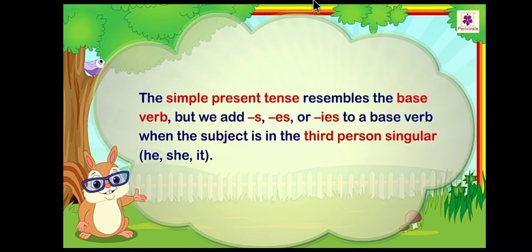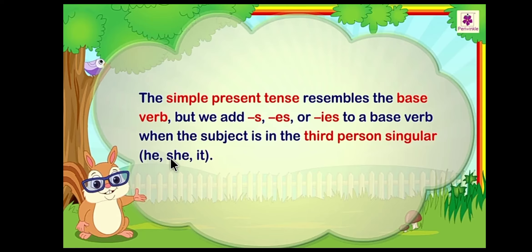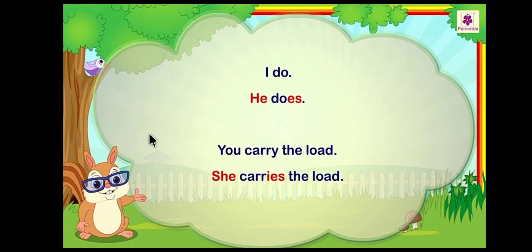Now, what is a simple present tense? The simple present tense resembles the base verb, but we add S, ES, or IES to a base verb when the subject is in the third person singular — he, she, or it. See the example for more clarity: I do, he does.